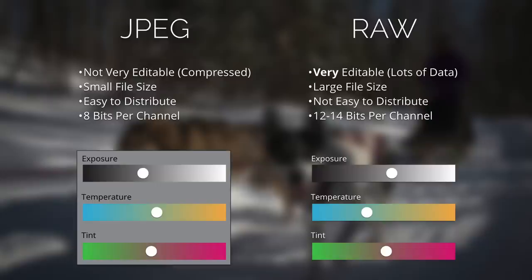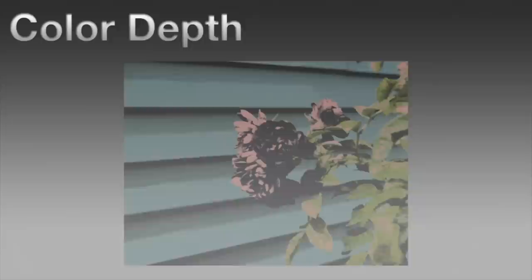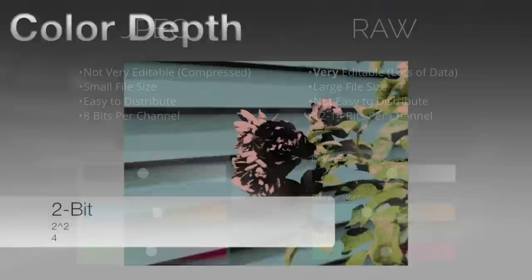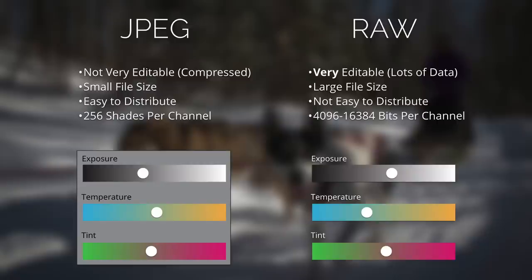What does the bit stuff mean? It has to do with values — in this case, levels of intensity or shades. With a JPEG, 8 bits per channel — channel meaning red, green, and blue — gives us 256 shades per channel. Whereas with the 12 to 14 bits with RAW, we get about 4,096 to 16,384 shades. So we can have a lot more shades, a lot more quality, and a lot more control over the light, the exposure, and the color — and create a much better end product with RAW photography.